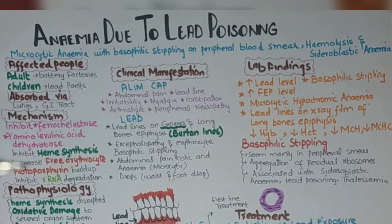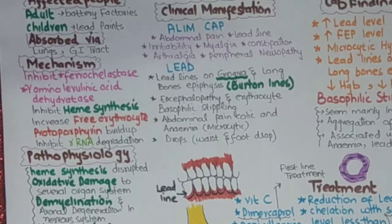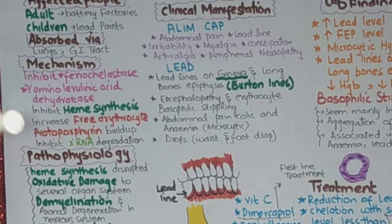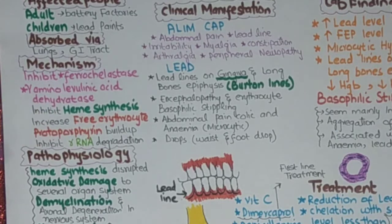What is the mechanism? As seen in the previous lecture, different enzymes are involved in heme synthesis. Lead acts on some of them, like ferrochelatase and gamma-aminolevulinic acid dehydratase. So it inhibits heme synthesis, increases free erythrocyte protoporphyrin buildup, and inhibits ribosomal RNA degradation.